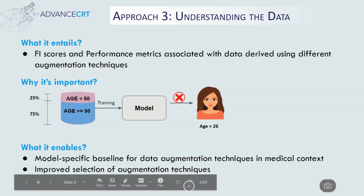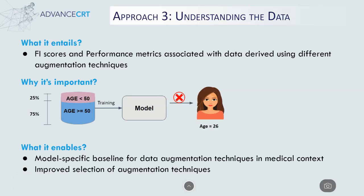In the third approach, the FI scores and performance metrics associated with data derived using different augmentation techniques are presented. This is important as the underlying training data matters a lot and can be a cause of a model's poor performance if it is not properly preprocessed. For example, in the cervical cancer dataset, if 75% of the records are of women over 50 years of age, then the model will not be appropriate to apply on the medical record of a young woman aged 26. This approach can enable medical practitioners to understand the effects of different augmentation techniques on model operation and performance, and based on this understanding they can establish a baseline by providing a validated feature ranking and desired performance metrics. This baseline can enable better selection of augmentation techniques by the data scientist.